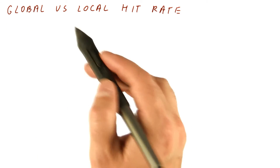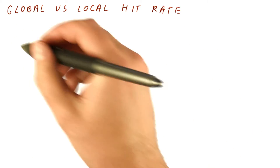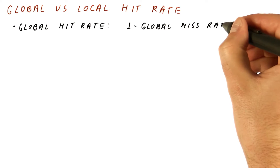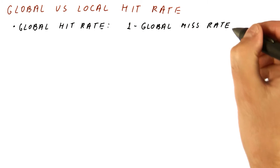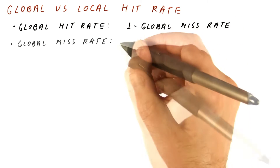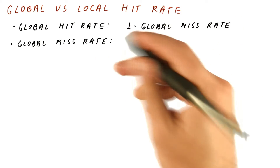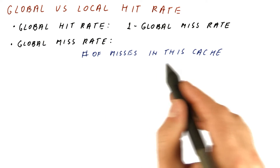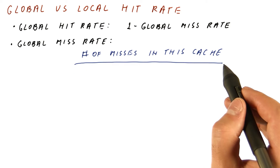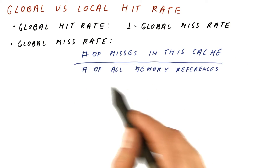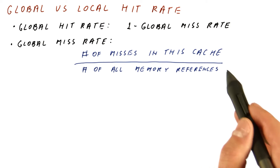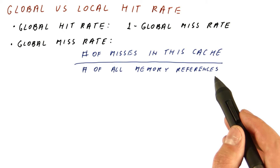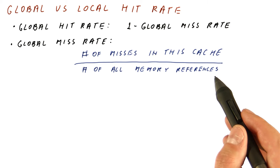Let's define the global and local hit rate. The global hit rate can be defined as simply 1 minus the global miss rate. The global miss rate can be defined as the number of misses in this cache divided by the number of all memory references that the processor makes, not just those that reach this cache.